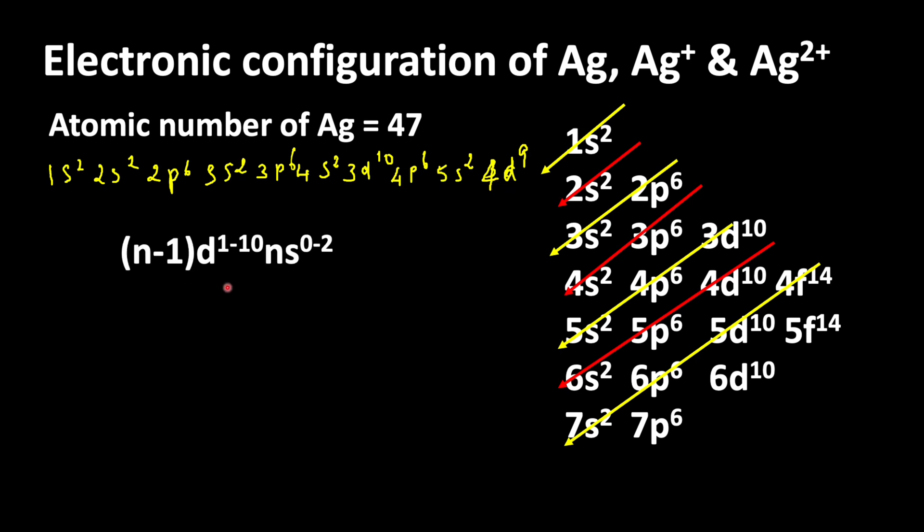The general electronic configuration of d block elements is (n-1)d^1-10 ns^0-2. While changing the electronic configuration, we write the inner d orbitals first, then the outer s orbital. It means first we write 4d orbital, then 5s orbital. So, 4d10 5s1.